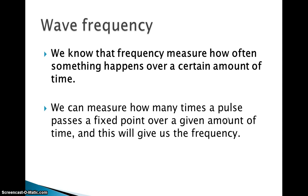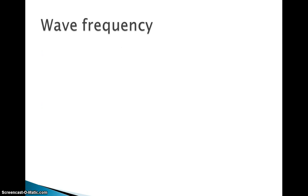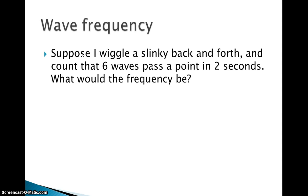We can measure how many times a pulse passes a certain point over a given amount of time, and this tells us our frequency. Frequency is the number of times a pulse passes a fixed point over a given amount of time. For example, if six waves pass a point in two seconds, the frequency would be three cycles per second.